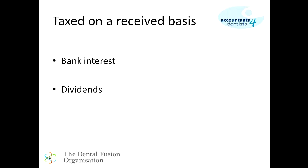When we talk about income taxed on a received basis, we mean income that we physically receive in our bank or in our hands. That's limited to only two types of income: bank interest and dividends. Whilst your bank account may have accrued interest over a full calendar year, you may not actually get that interest until perhaps every six months or once a year. It's only at the point you receive the interest that the income becomes taxable. The same rule applies to dividends.